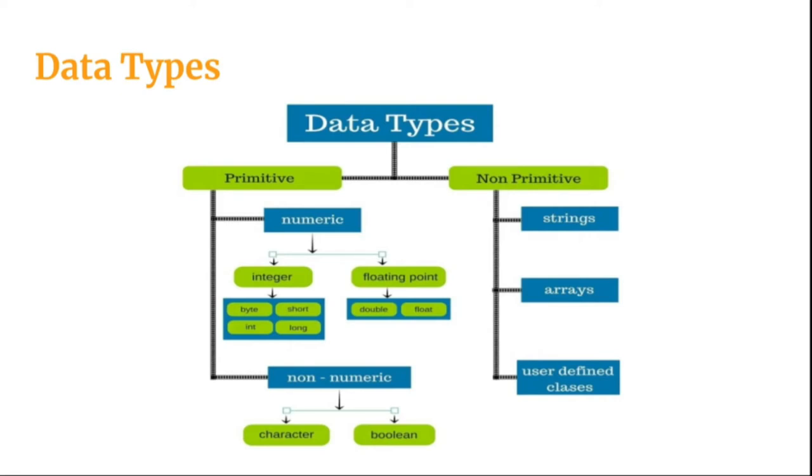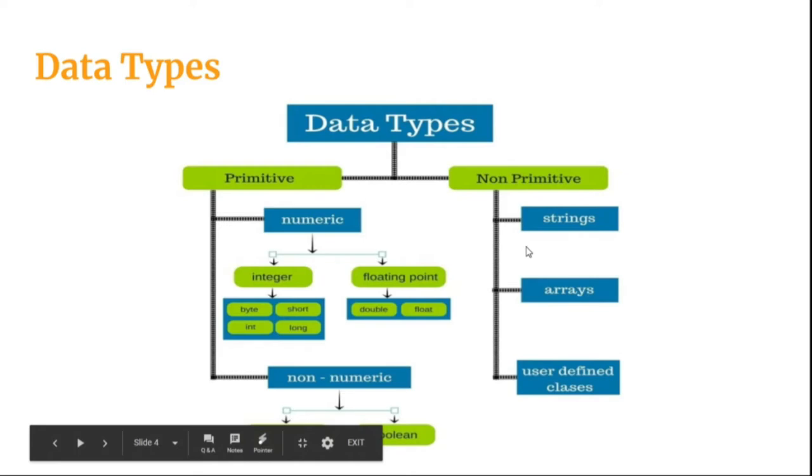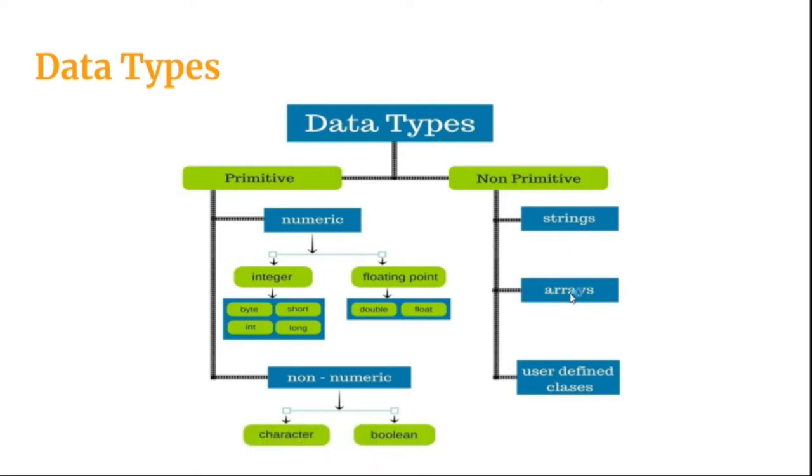And when we come to non-primitive, we have got multiple data types. Most common ones are string, arrays and some user defined classes.